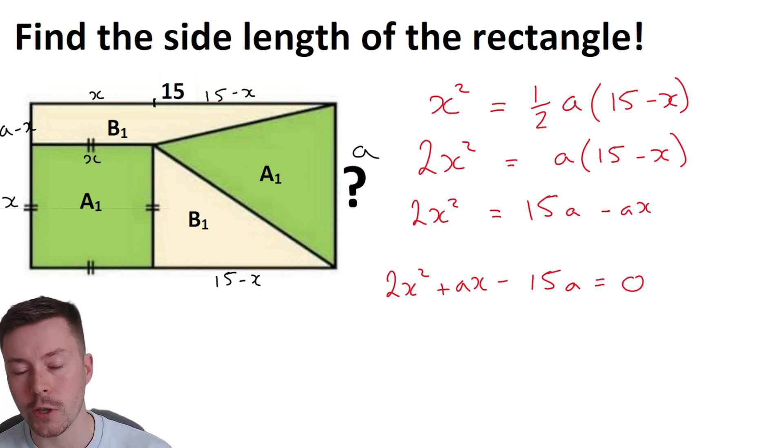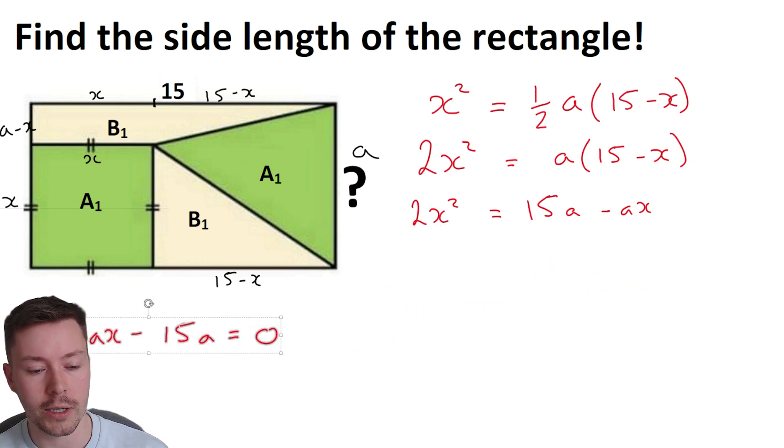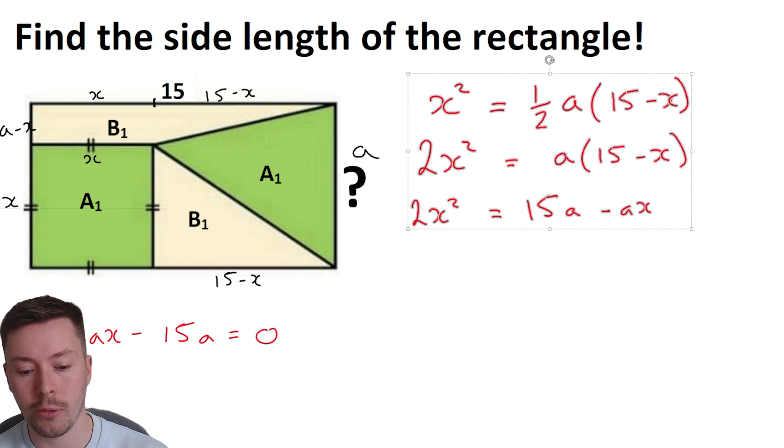Let's get all of that onto one side. So we get 2X squared plus AX minus 15A, because remember A is going to be a value, a number. Now I could start to try and solve this with a quadratic formula and get X in terms of A, and that is a valid route to go down, but it leads to more complications later on. So I'm not going to do that for the moment. But what I am going to do is I am going to put this to one side, because that will be useful later on, that quadratic.